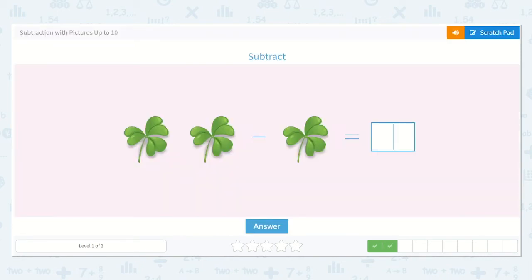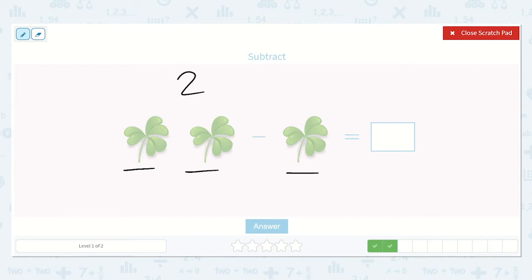Alright, here I see that we have 1, 2 clovers. And they want us to take away 1, so it would be 2 minus 1 is equal to a number. So, if we have 2, and we take 1 of those away, how many are left? Yep, just 1. So, 1 is our final answer.